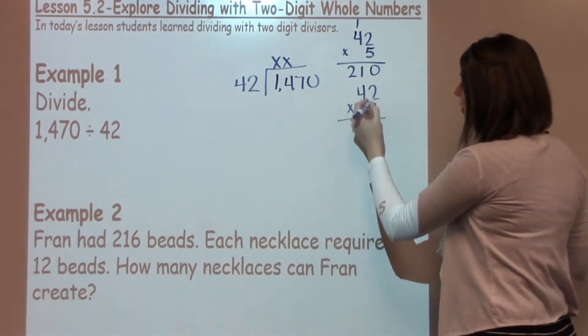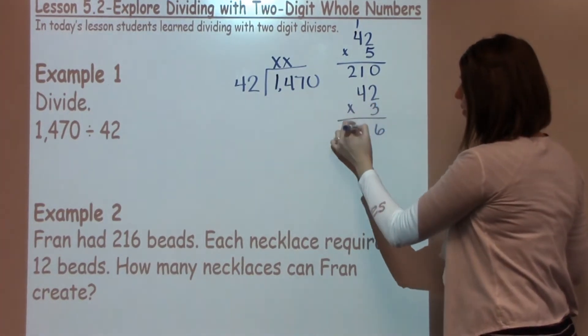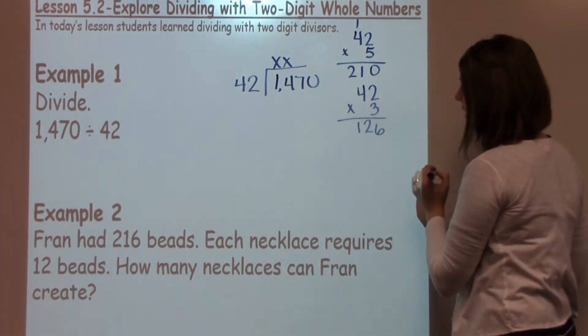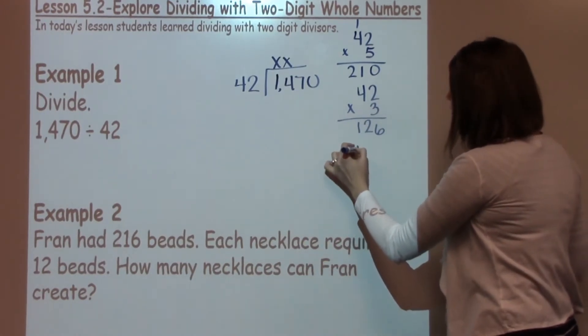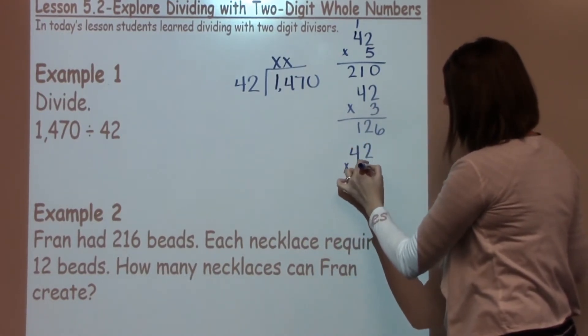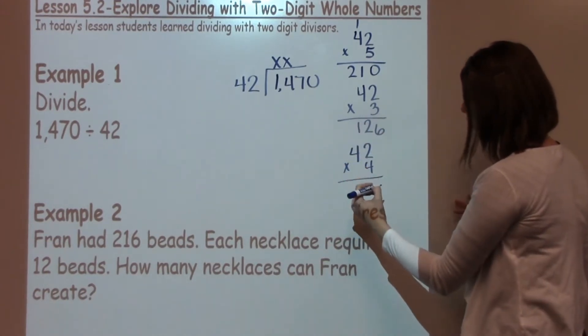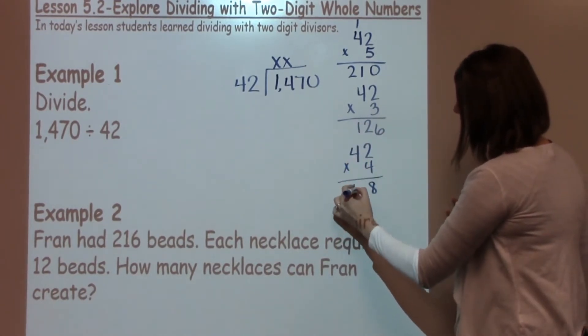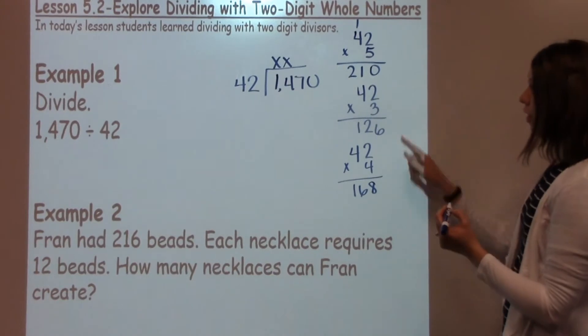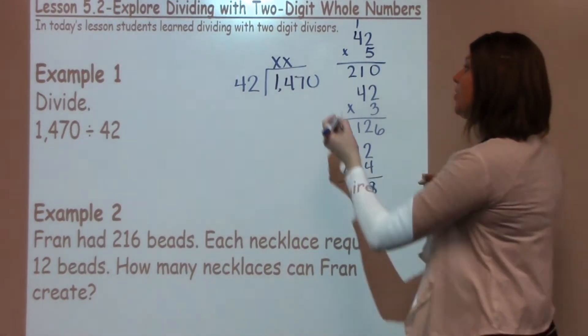42 times 3 gives me 6 and that's going to give me 12, which is 126. I'm just going to double check one more time with 4 just to make sure that I can't get any closer than my 126. And when I do that, I get 168, which I've gone over. So now the best answer I'm going to use is 3.